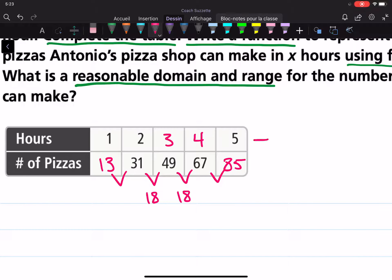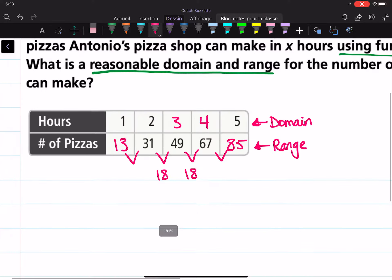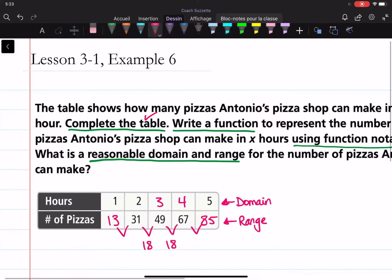Okay. This is our domain, assuming they stop at five hours of work. And this is our range for if they stop at five hours of work. So we completed the table.